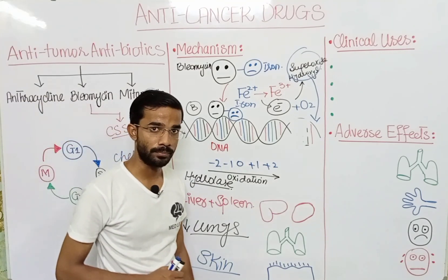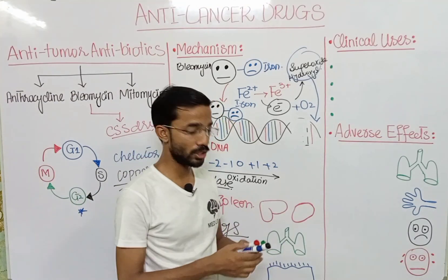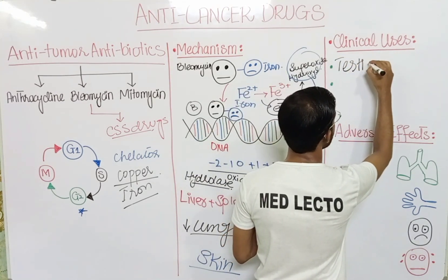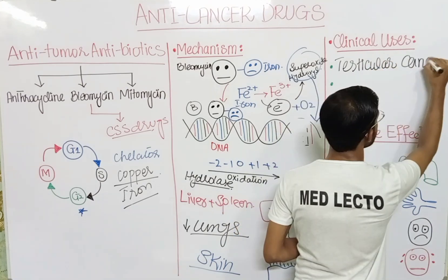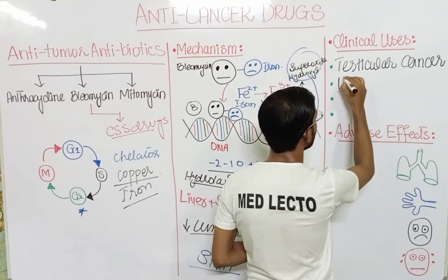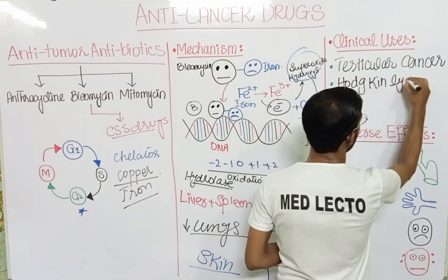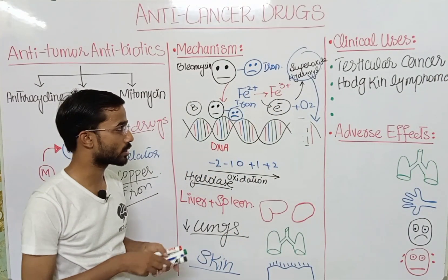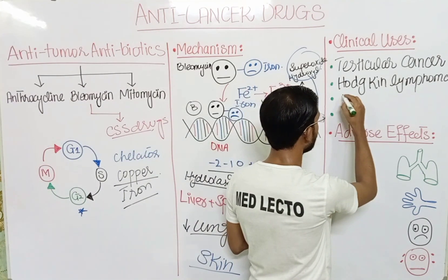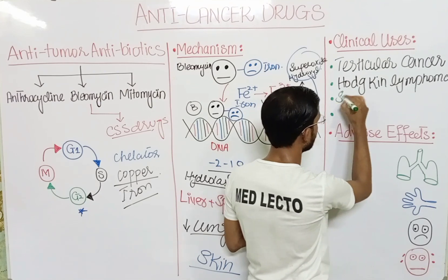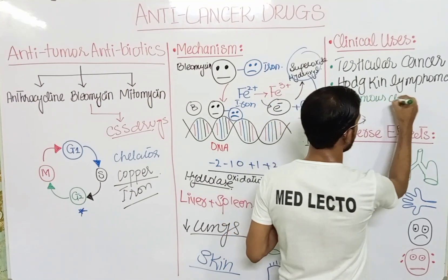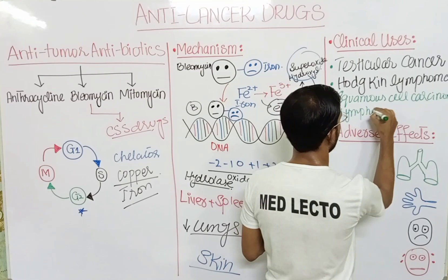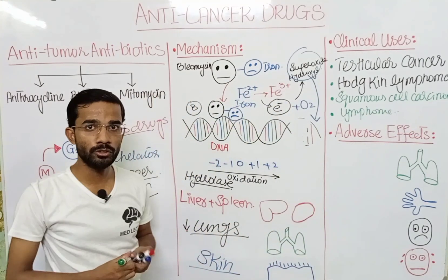Regarding the clinical uses of bleomycin: it is specifically used in two most important cancers — testicular cancer and Hodgkin lymphoma. Other cancers in which bleomycin is used include squamous cell carcinoma and other lymphomas as well. These are basically the most important cancers in which bleomycin is used.